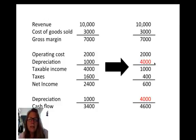If we can take more depreciation—$4,000 in this case—the cash flow has increased by the tax shield benefit. It went from $3,400 to $4,600 only because depreciation increased.